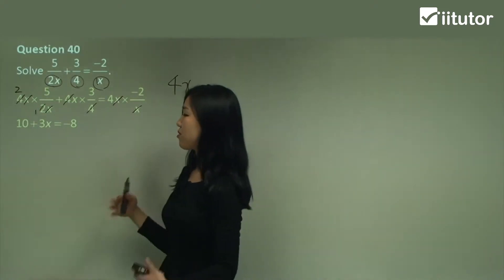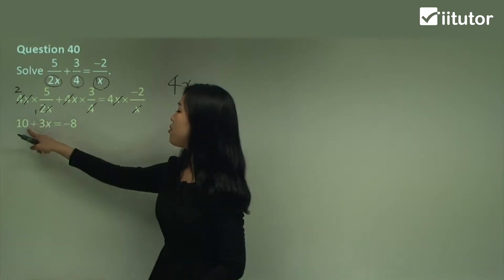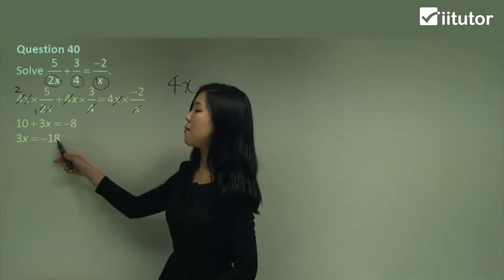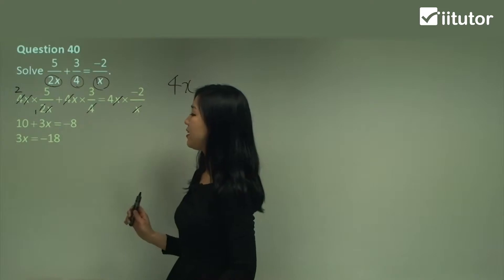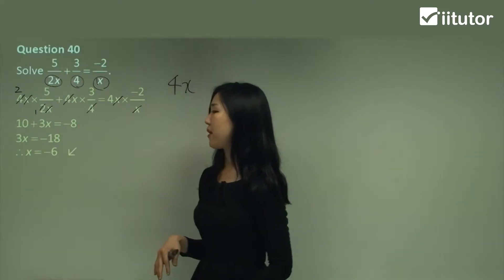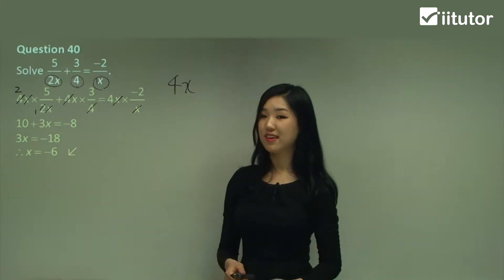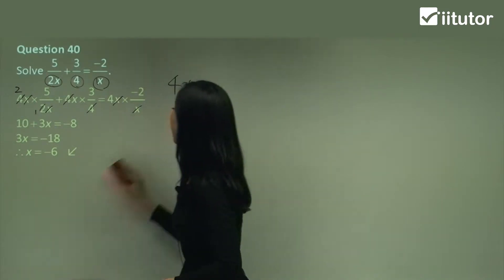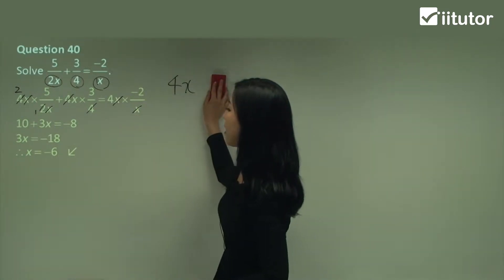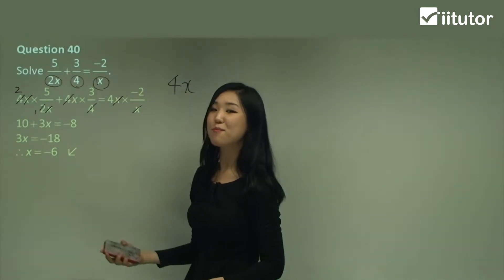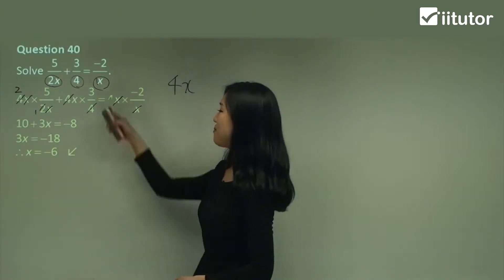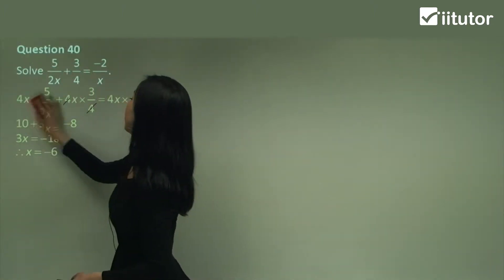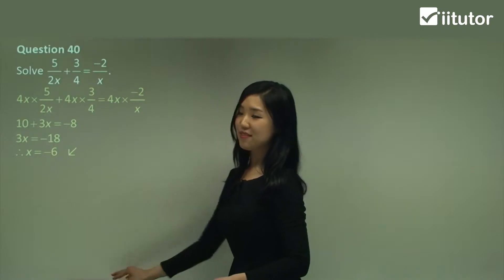So the rest is really simple. Move the 10 over to the other side, so it's negative 8 minus 10, which is negative 18. Then divide by 3, you get negative 6. That's the answer. So again: lowest common multiple multiplied by the extra pronumeral x. So that's question 40.